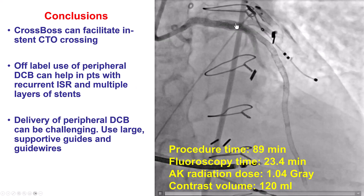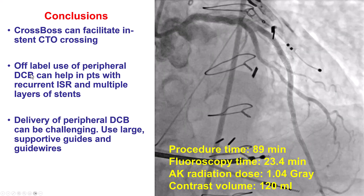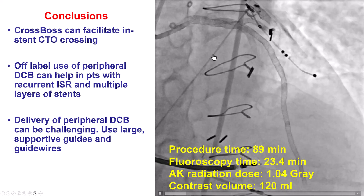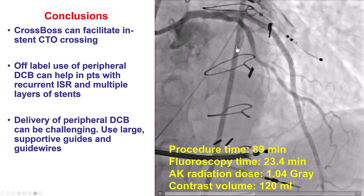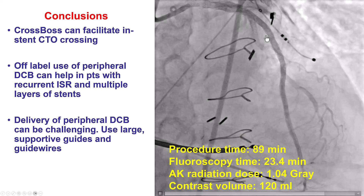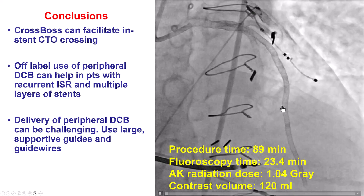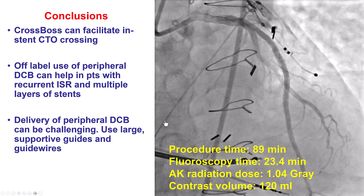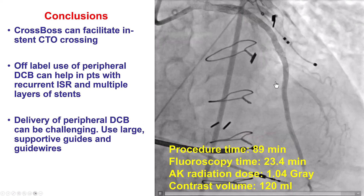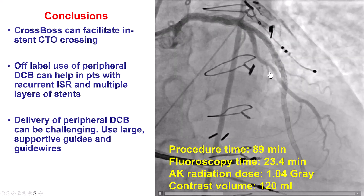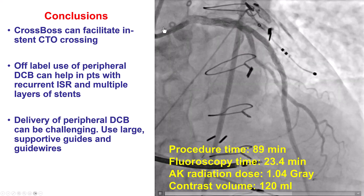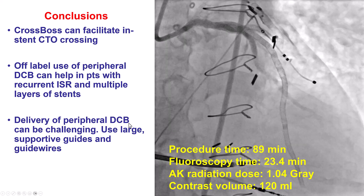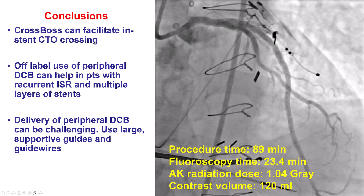In terms of preventing restenosis and reocclusion, we used off-label a drug-coated balloon. Hopefully soon we will have coronary drug-coated balloons in the United States as well — that would be an effective solution to this problem. And to deliver that balloon, which is pretty bulky, we had to use a fairly supportive system: 8 French guide, Grand Slam guidewire — but we were eventually successful. Thank you.